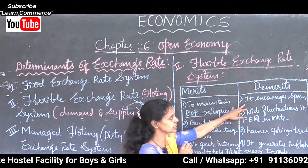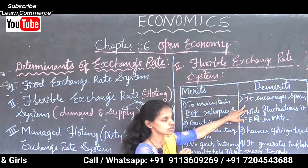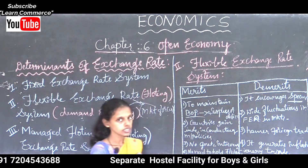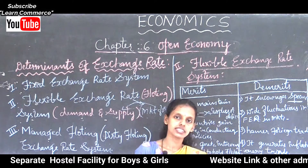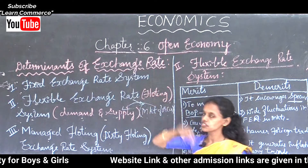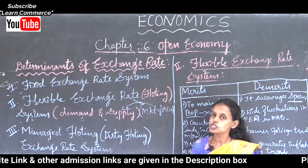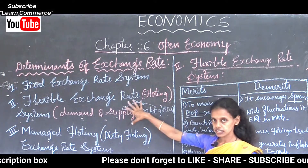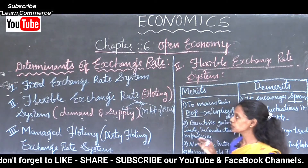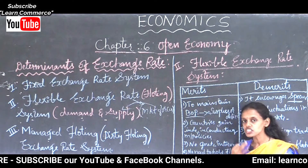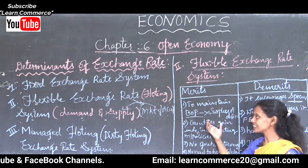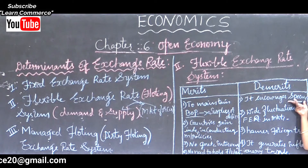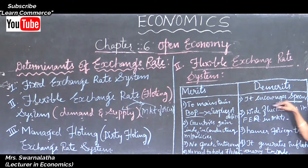The demerit of the flexible exchange rate system or floating exchange rate system is that it encourages speculation. In the fixed exchange rate system, there is no chance for speculation because people already know the demand and supply of the foreign exchange rate. But under flexible exchange rate, speculation — that is predicting the future price or future foreign exchange rate — is encouraged. This is one of the demerits.